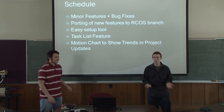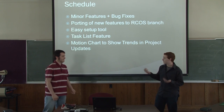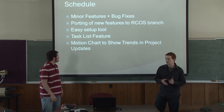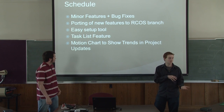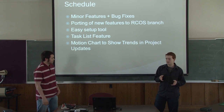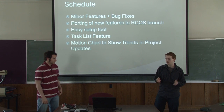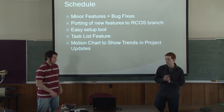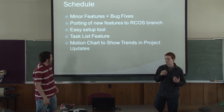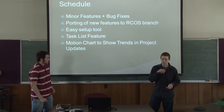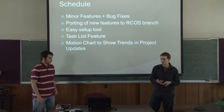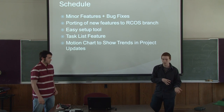So the schedule we're working on now: the first thing we have to do is minor updates, features, and bug fixes, and then whatever we make on the generic one we'll port over to the RPAWS branch, because that's a lot simpler than going the other way around. Two things I really want to do are an easy setup tool and a task list feature. The easy setup tool would basically run the first time and set up the administrator accounts and all the other settings you can customize for your server.